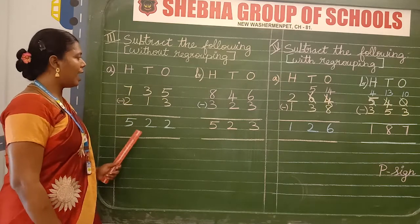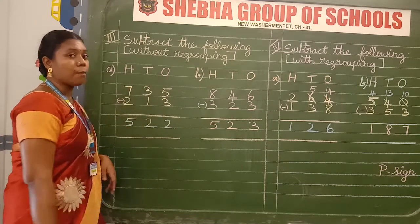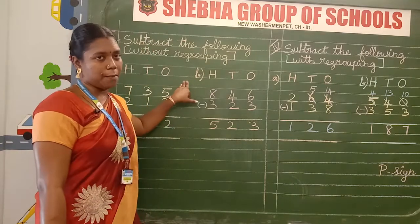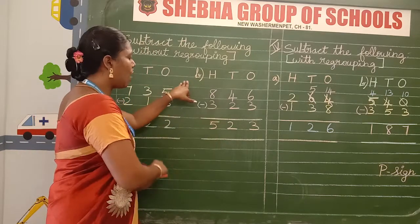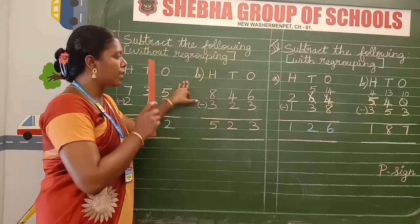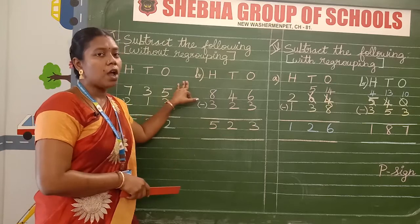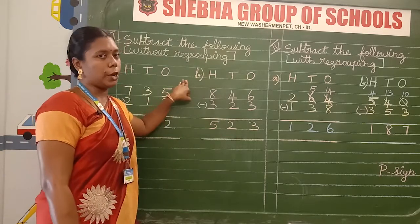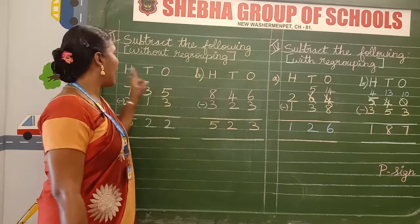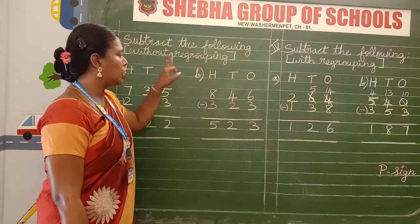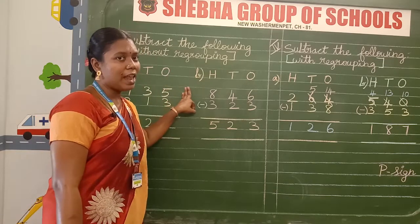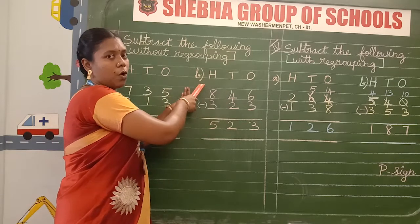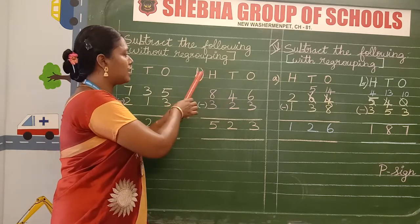Are you clear, children? After finishing the A sum, leave 3 finger gaps. You can use only one page — write both A sum and B sum on the same page with a 3 finger gap between them. After finishing the A sum, leave the 3 finger gap and start writing the B sum.